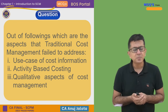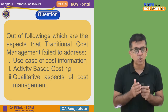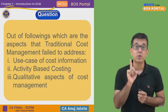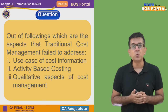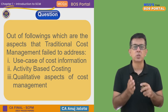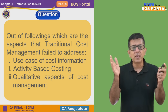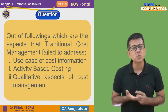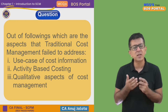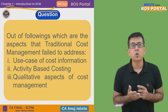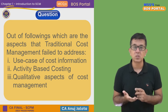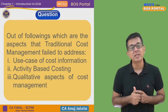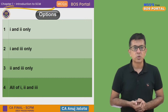Traditional cost management — think of your CA Inter chapter on overheads or absorption costing — basically does allocation, apportionment, reapportionment, and ultimately absorbs all overheads based on machine hours and labour hours. But every cost in this world is not dependent on machine hours and labour. Strategic cost management considers activity-based costing and qualitative aspects as well.